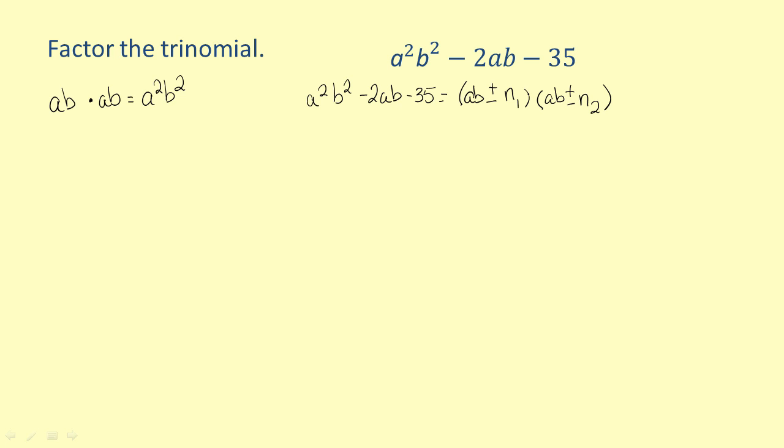Since the product of n1 and n2 will be equal to negative 35, and the sum of n1 and n2 will be negative 2, search the factors of 35 whose sum is negative 2.